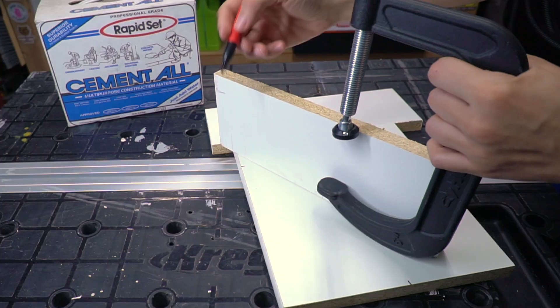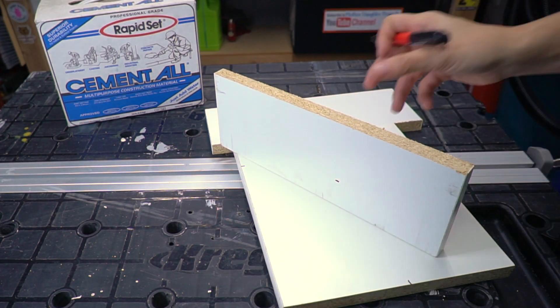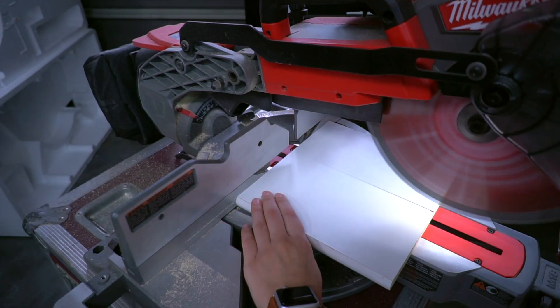Decide the size you want your concrete base to be. Measure the height of the sides to the clamp. Use a saw to cut the melamine to size.